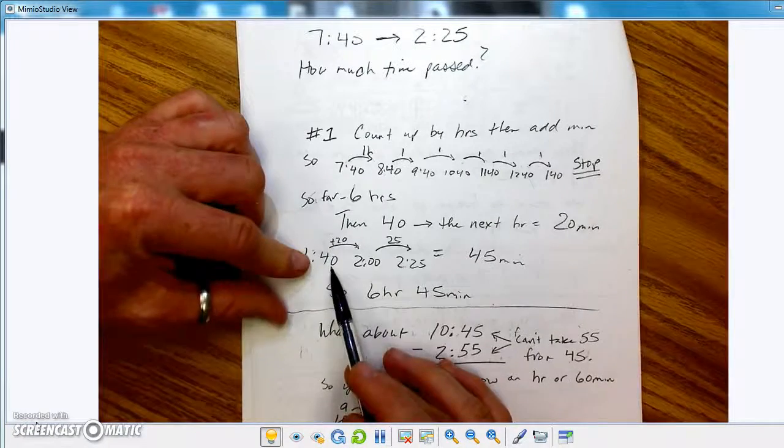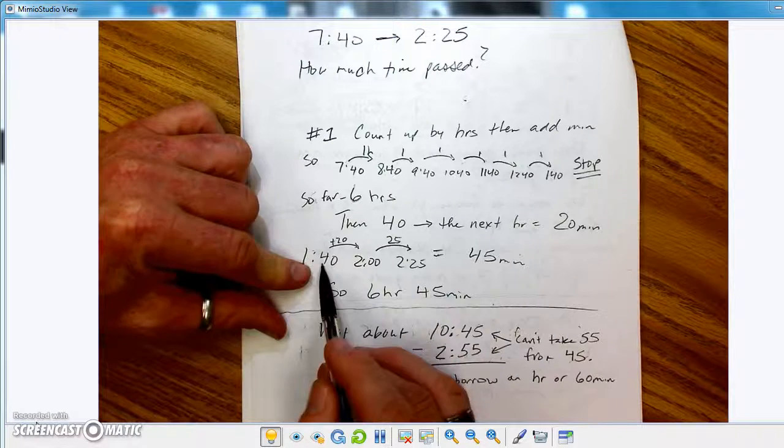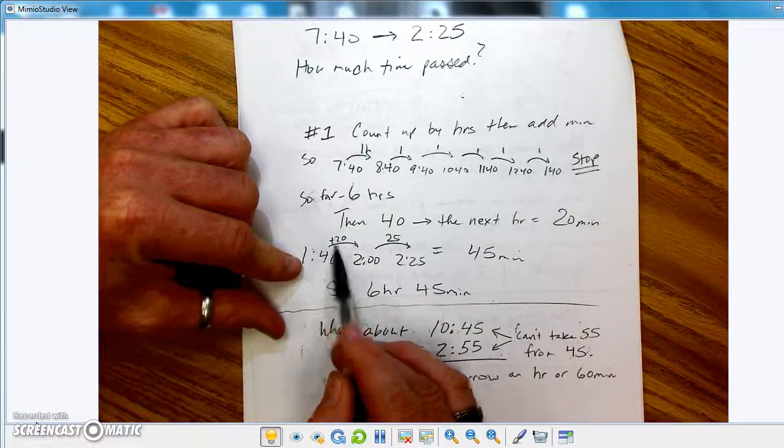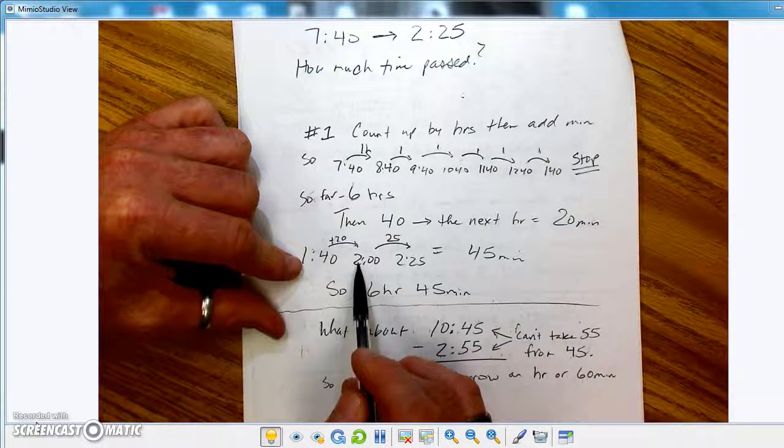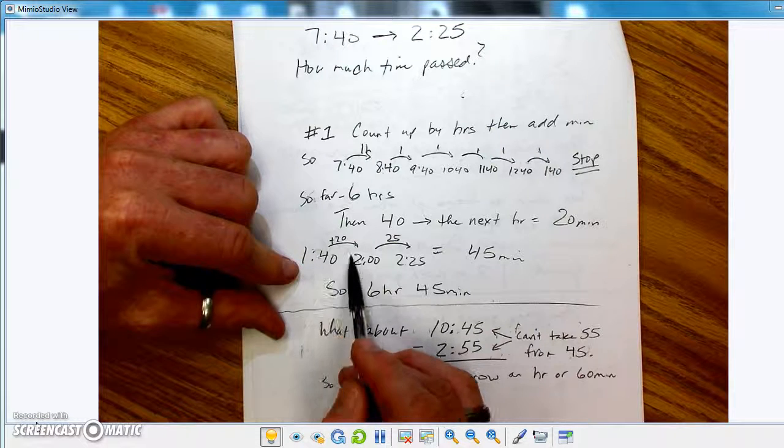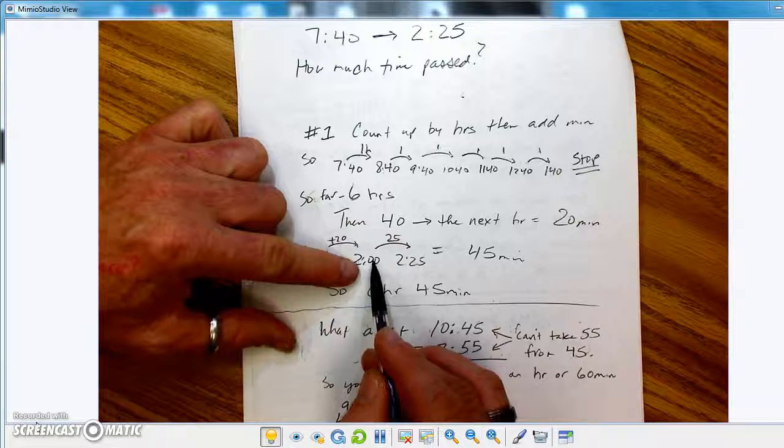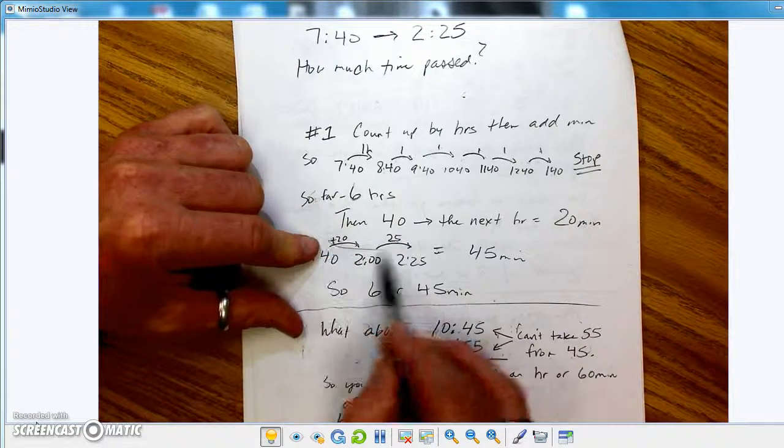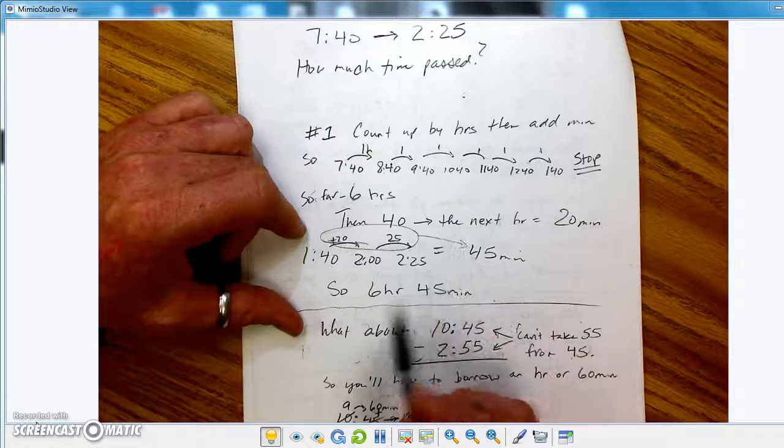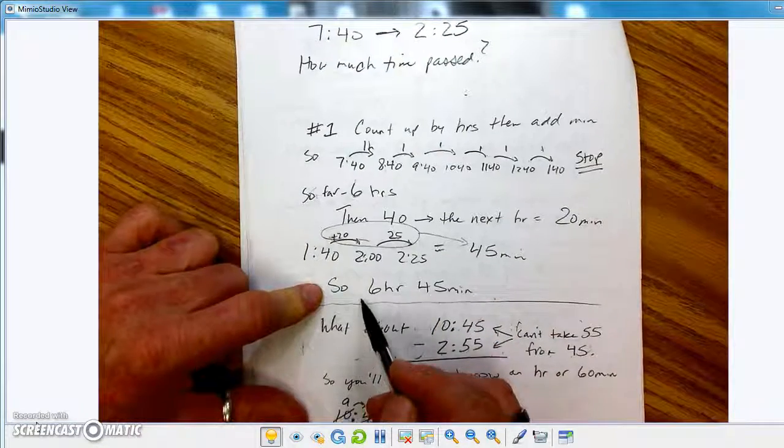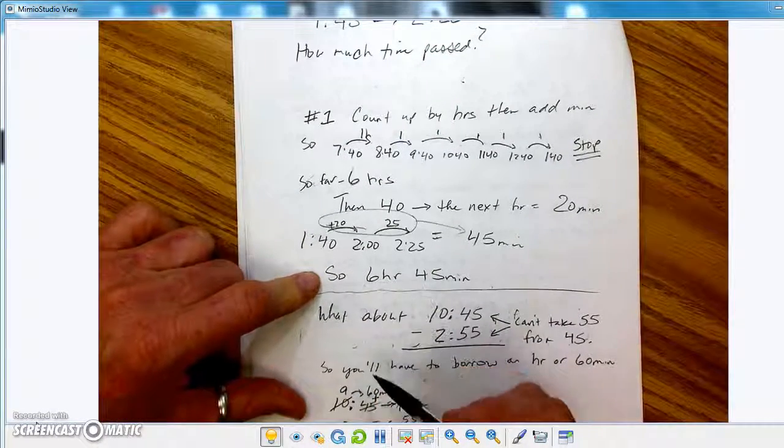I've got 6 hours so far. Now I need to get this 40, this 1:40, up to a 2:25. So I'm going to bring that 1:40 up to 2 o'clock because 2 o'clock is a lot easier to work with. So 1:40 to 2 o'clock is plus 20 minutes. And then to go from a 2 o'clock to a 2:25 is plus 25 more minutes. So add that up and you end up getting 45 minutes. So your total is 6 hours, 45 minutes.